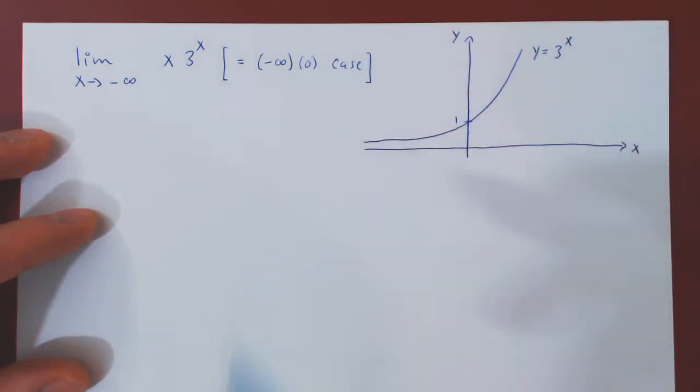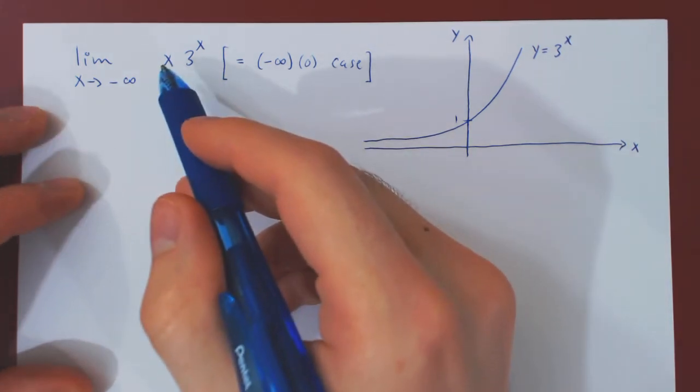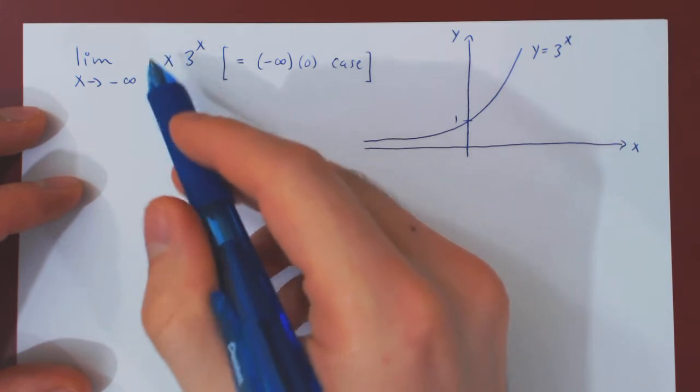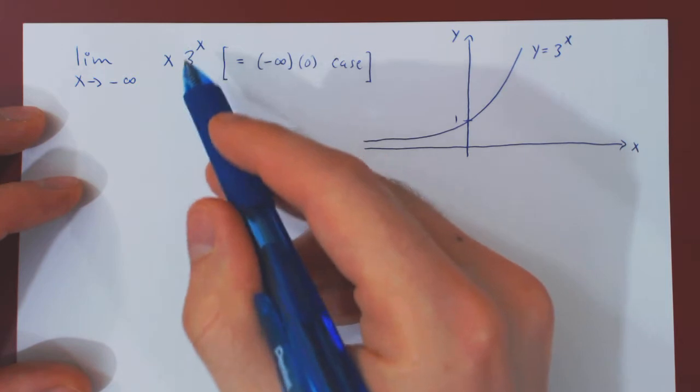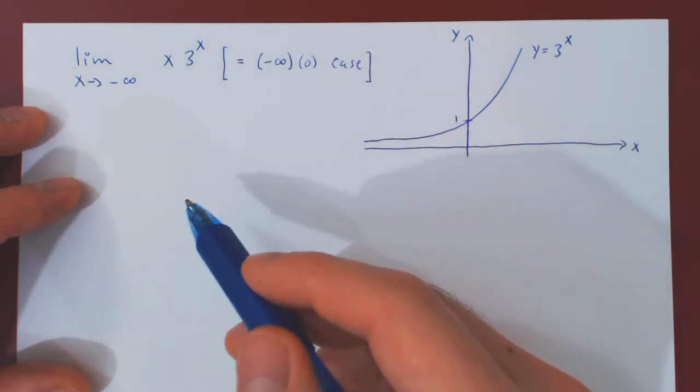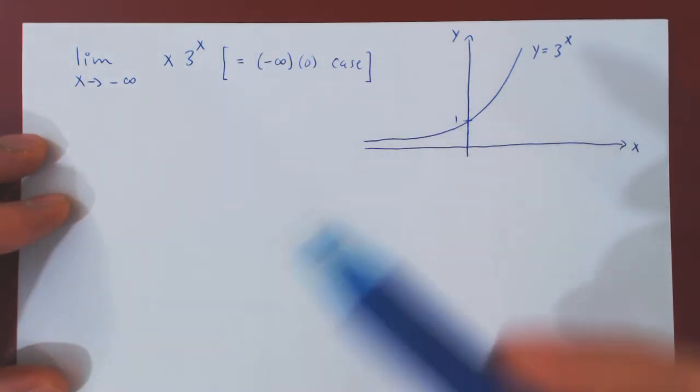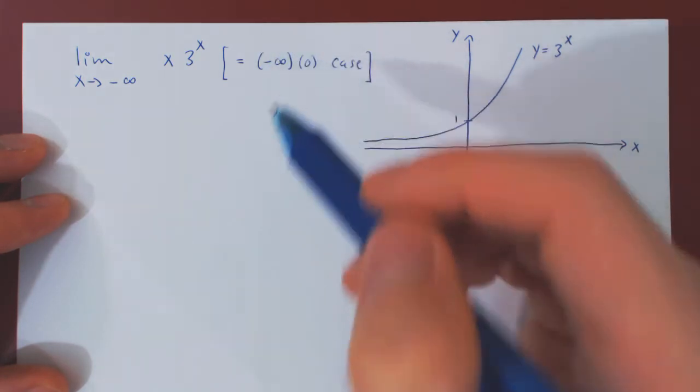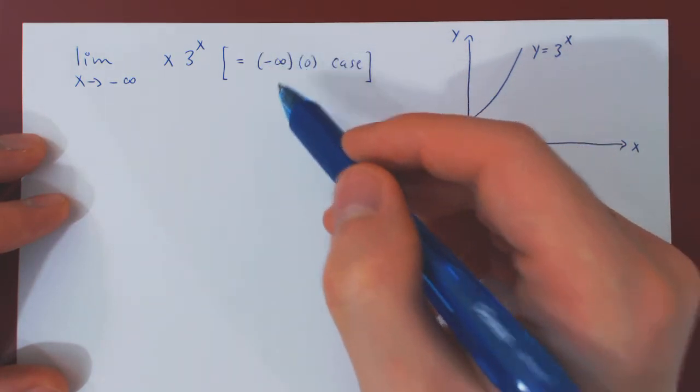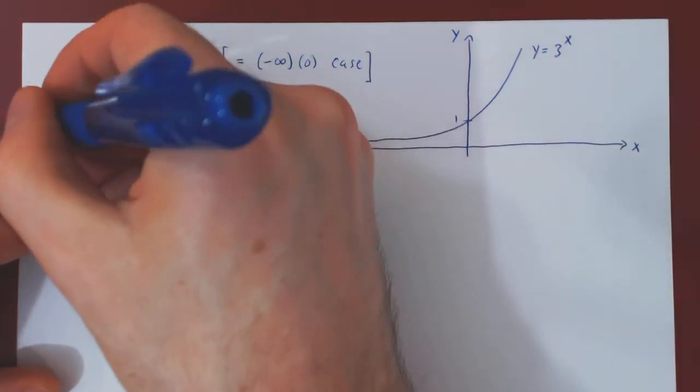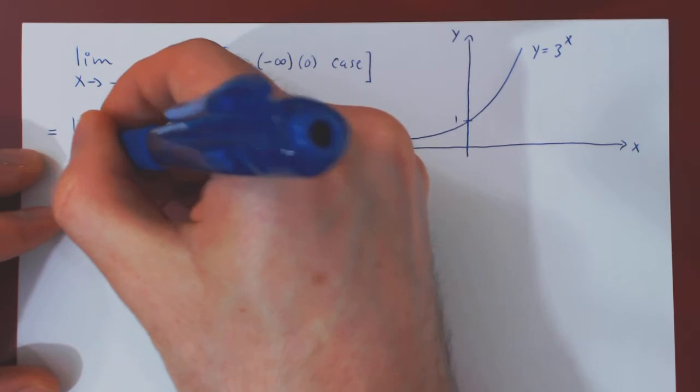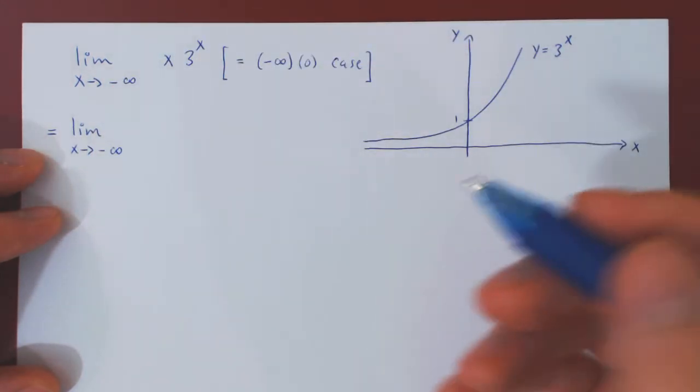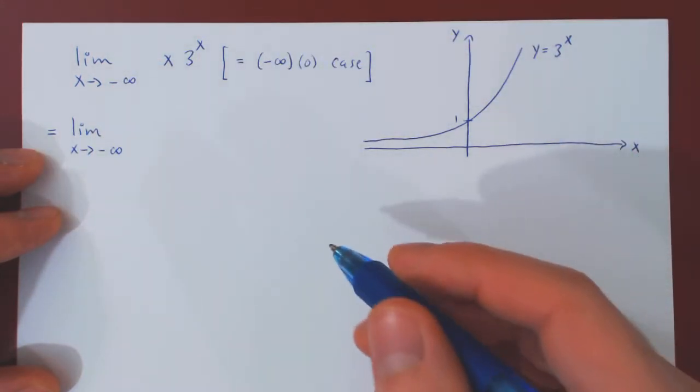So we have a strange case here, where on the surface we cannot apply L'Hopital's rule. We have a product of two functions, where the first gets larger and larger and negative, and the second gets smaller and smaller and shrinks to 0. But we can only apply L'Hopital's rule if the case is of the form 0 over 0, or infinity over infinity. Well, the idea here is quite simple. If we send one term to the denominator, we create a fraction, and as we'll see, then we can use L'Hopital's rule.